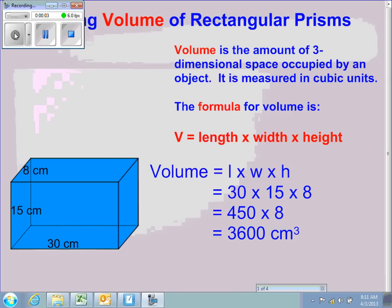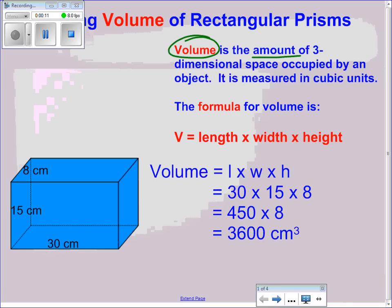Welcome once again to volume of a rectangular prism. Remember that volume is the amount of space occupied by an object. It's measured in cubic units and the way we write that is units cubed to the power of three.